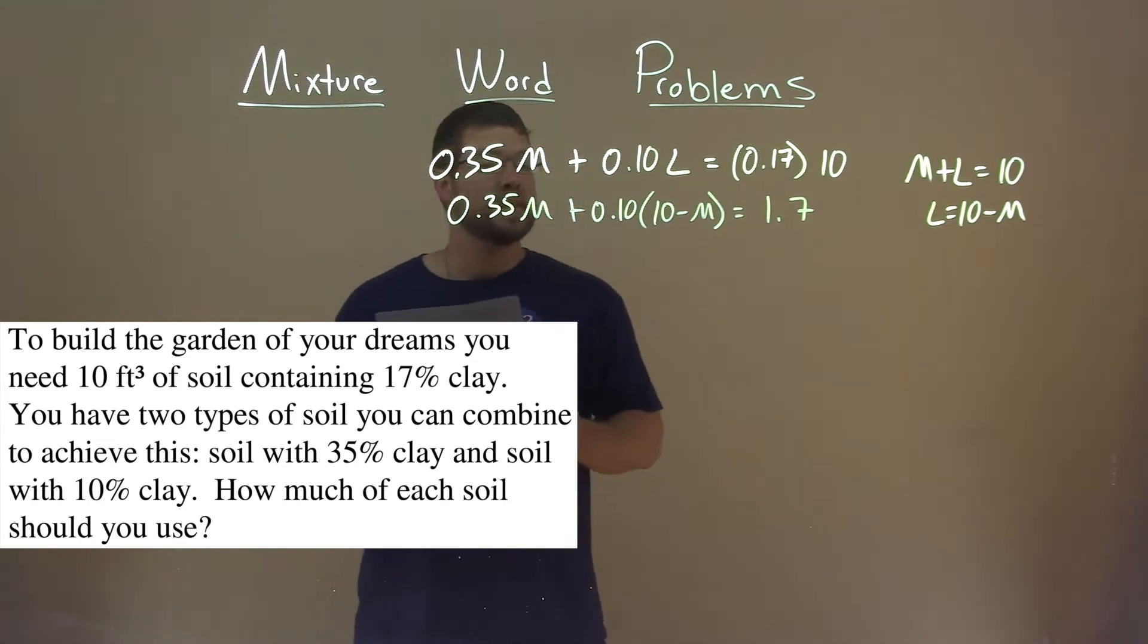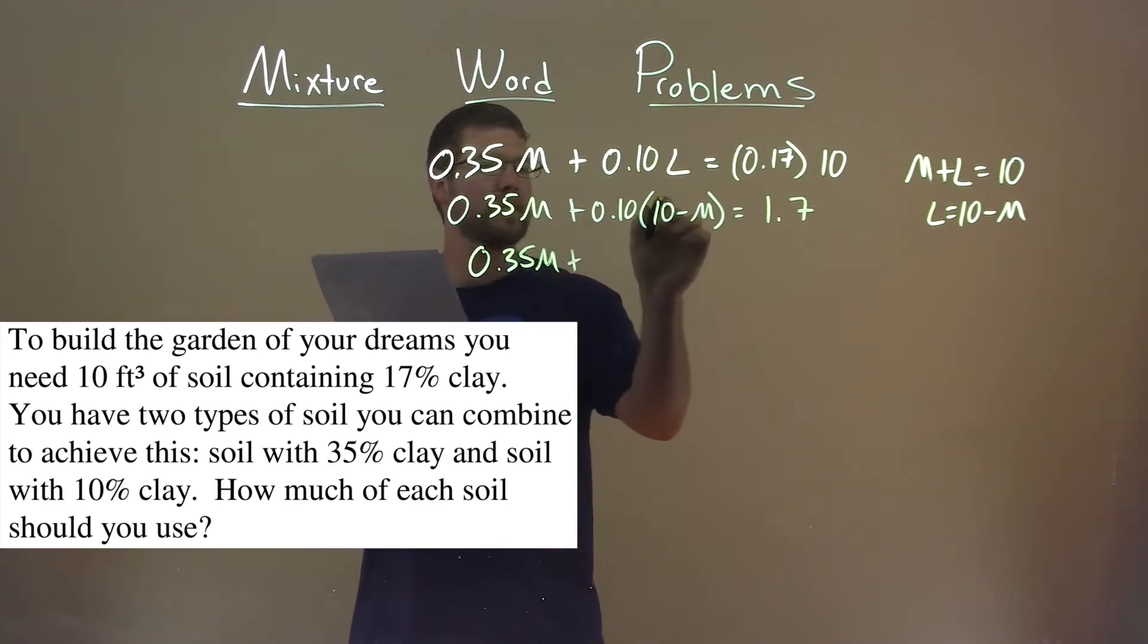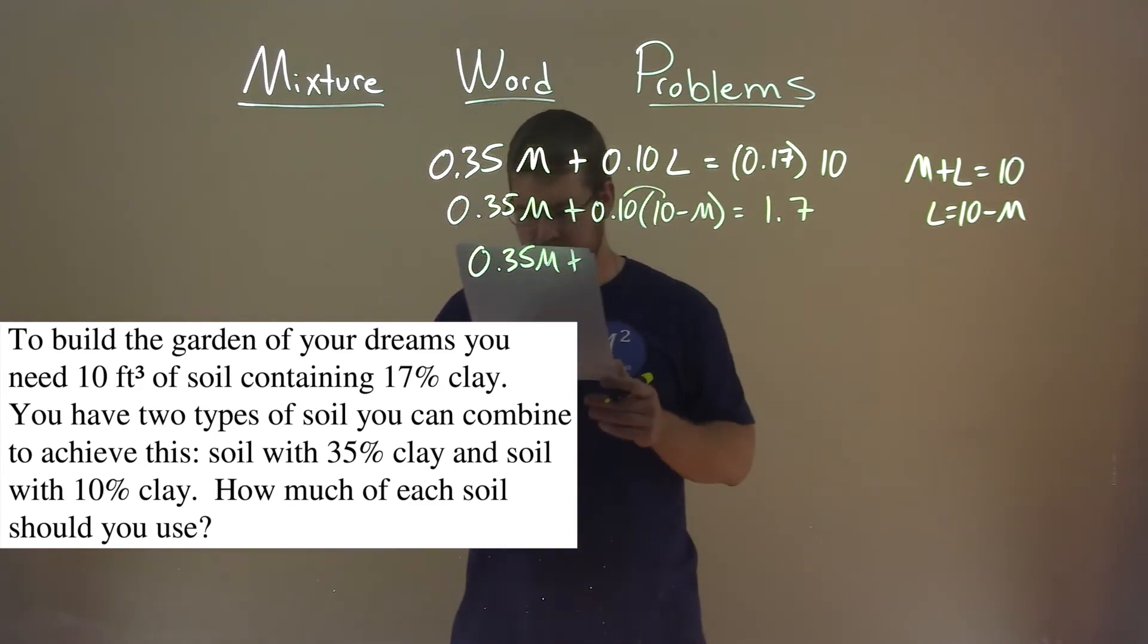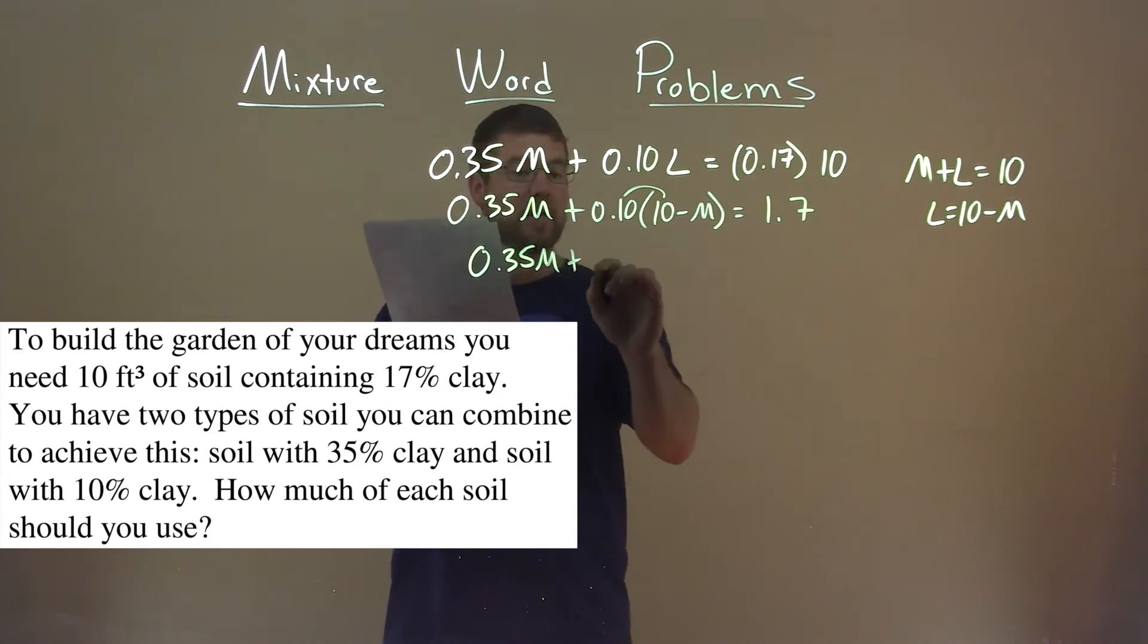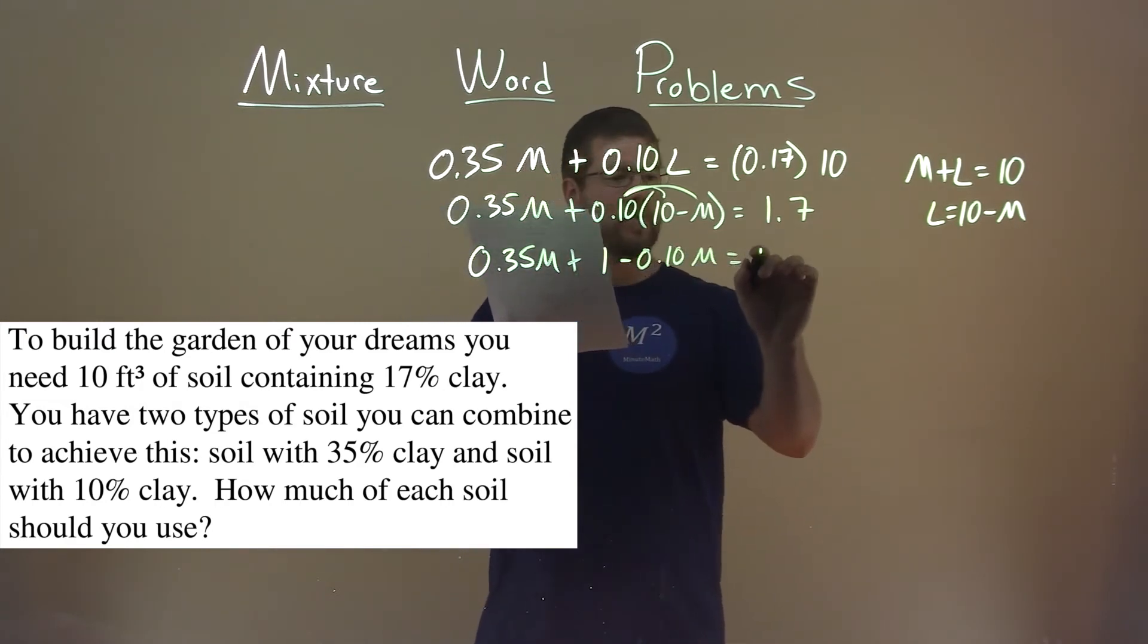We now need to simplify. So 0.35M is going to come down. Plus, distribute, 10 times 0.10 is 1, and 0.10 times M is 0.10M. And then again, that's equal to 1.7.